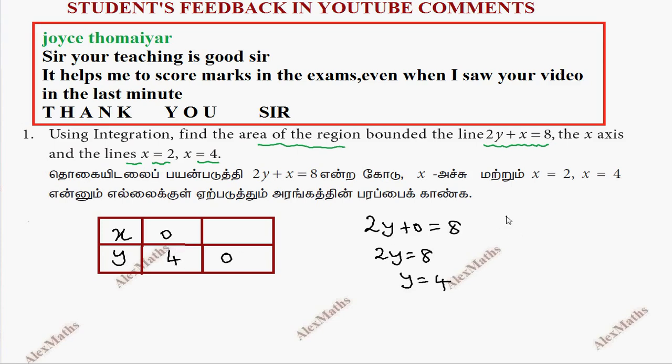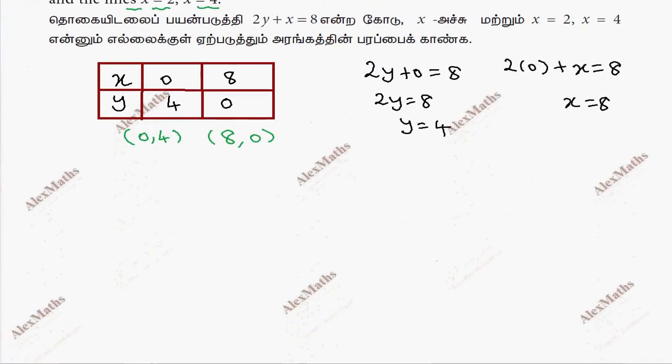So this is 4. When 2 into 0 plus x equal to 8, we get x equal to 8. So we have 2 points to plot. This is 0,4 and this is 8,0.